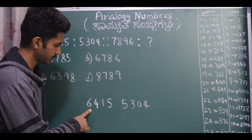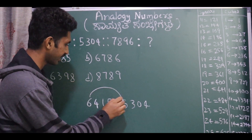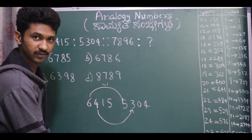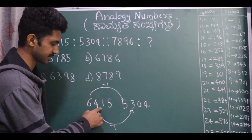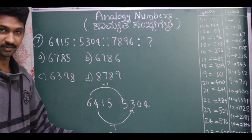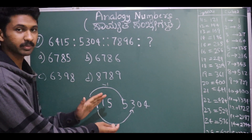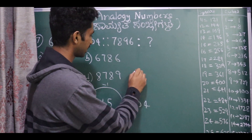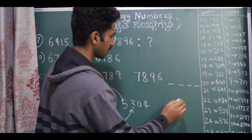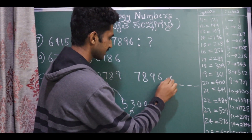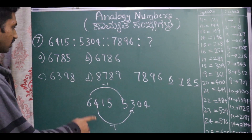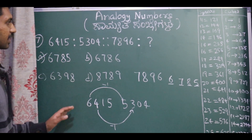Closely observe: see the first digit of the first number and the first digit of the second number — it is less by 1. Similarly, the second digit, third digit, and fourth digit are each less by 1. The 4th digits are 8 and 7, so reducing each digit by 1 we get 6, 7, 8, and 5. So the final answer is 6785.